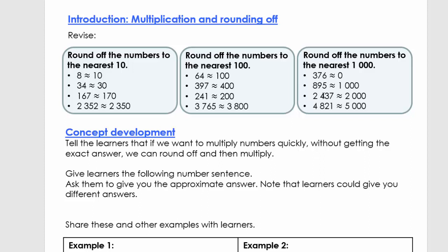For 2,437, between which two thousands will you find this number? It's between 2,000 and 3,000. We use the 100s place — the 4 — and since 4 is lower than 5, it goes to the previous number. So 2,437 rounded off to the nearest thousand is 2,000.